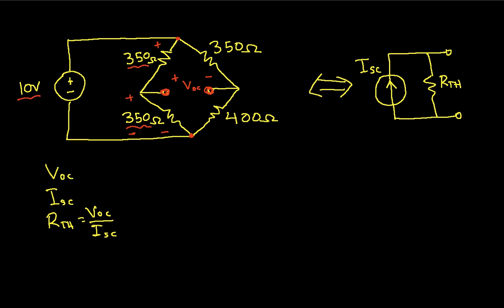And so I can use a voltage divider to get the voltage across this resistor here. And in fact, when I do that, let's call this V1. We have V1 is going to be 350 ohms over 350 plus 350 ohms times 10 volts, which we work out to be 5 volts.